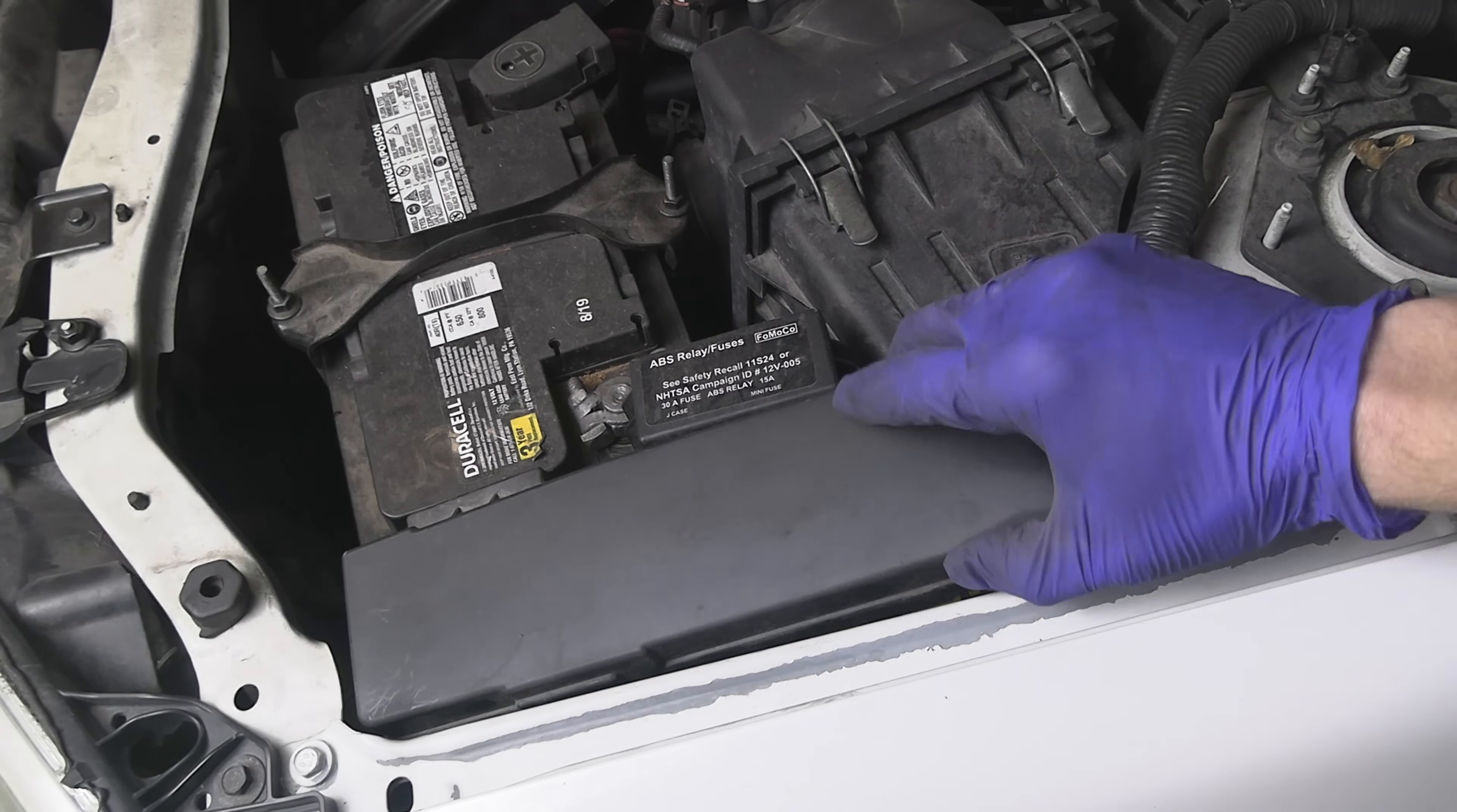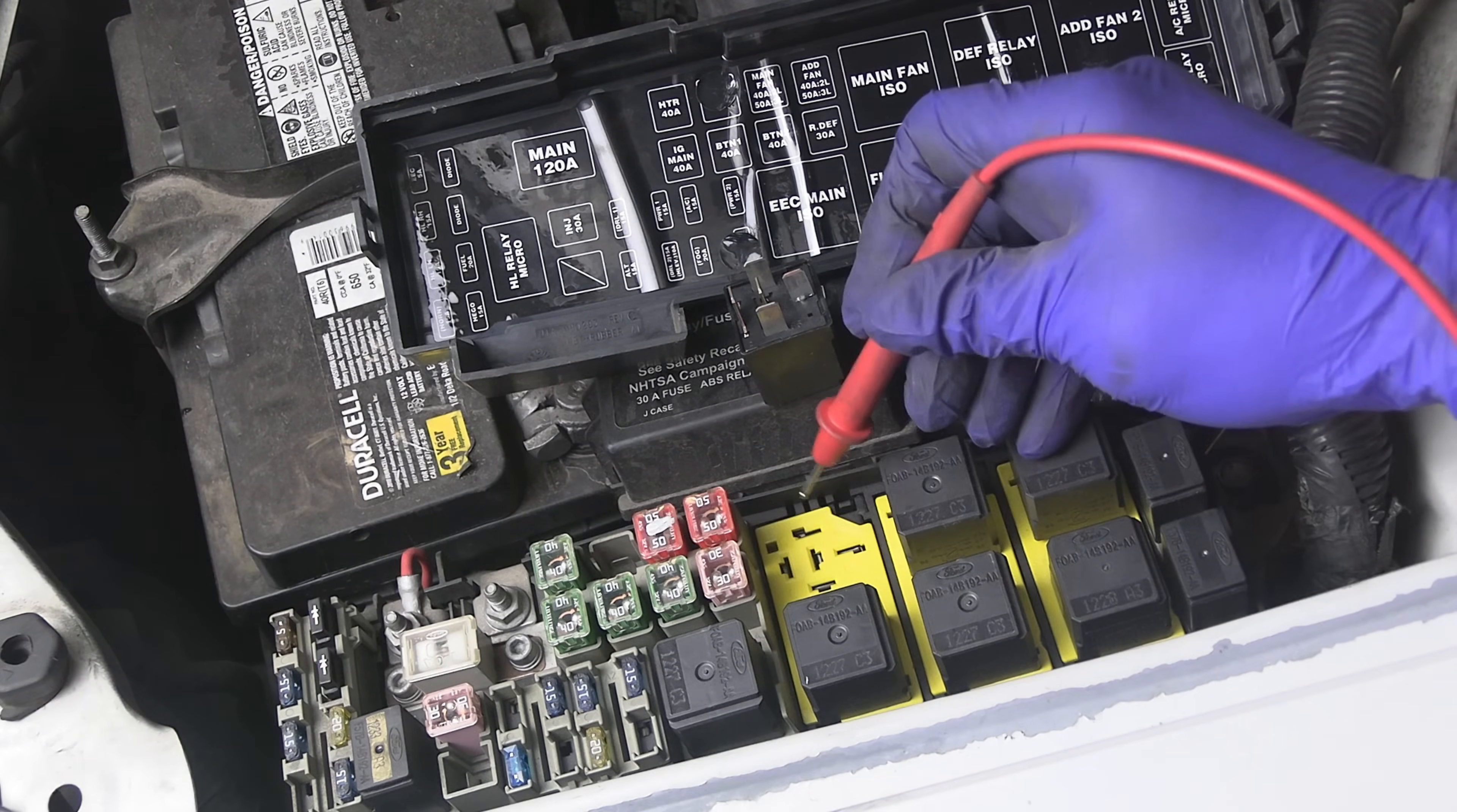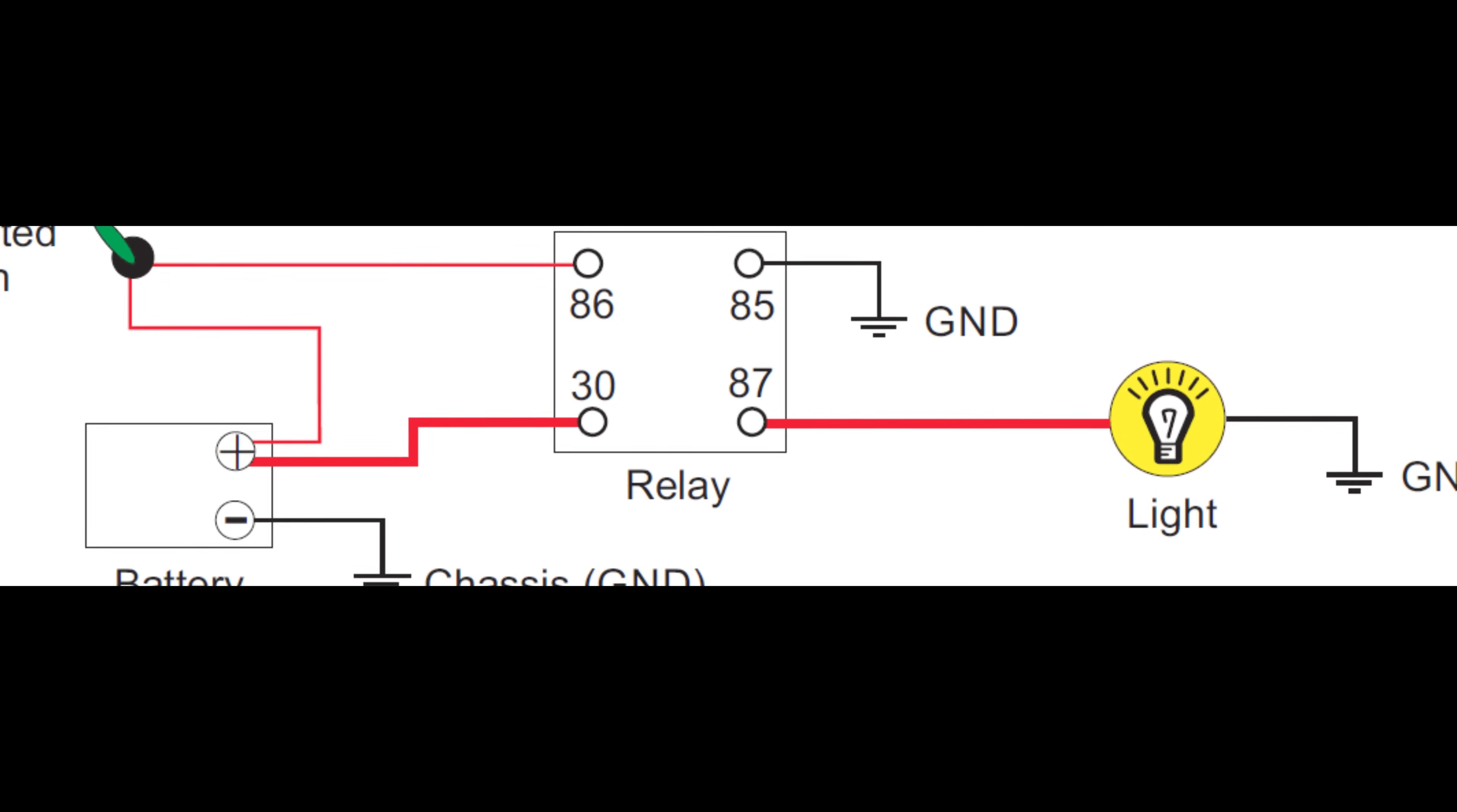In which case you can check the relay circuit to narrow down where the problem is. Check if the relay has power coming in from the control circuit, from the switch or from the computer. Does the relay get good ground? Does it get power for the load circuit? Will that power make it to its final destination? In other words, is there continuity between the pin 87 and your headlight bulb or radiator fan or your AC clutch and so forth?